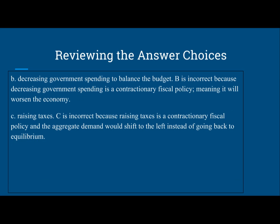Let's review the answer choices. B — decreasing the government spending to balance the budget — is incorrect because decreasing government spending is a contractionary fiscal policy, meaning it will only worsen the economy. Remember, there is a decrease in consumer confidence, which has caused a leftward shift of the aggregate demand. C — raising taxes — is also incorrect because raising taxes is a contractionary fiscal policy, and the aggregate demand would shift to the left instead of going back to equilibrium.